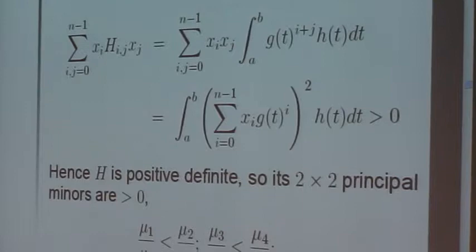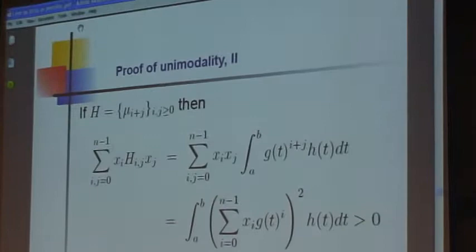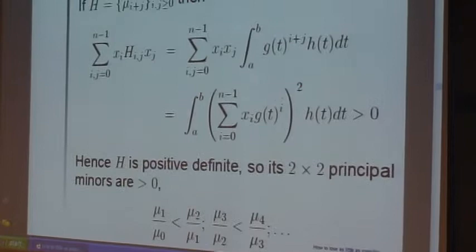Here is the quadratic form capital H, mu sub i plus j. And then look at its value, sum of xi, sum of j, x j. Works out to be the integral of the square of something times a positive function, and so it's certainly positive.